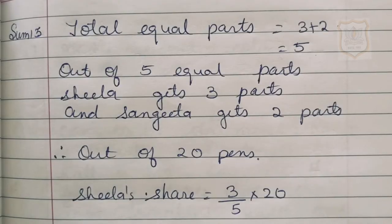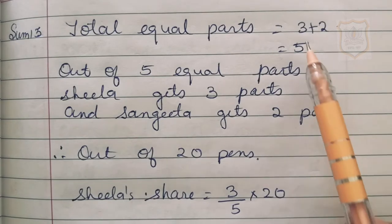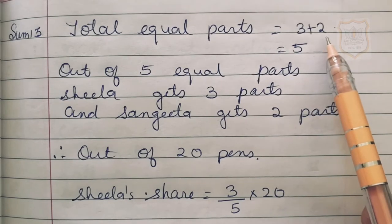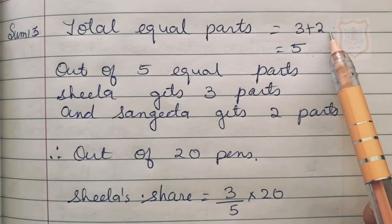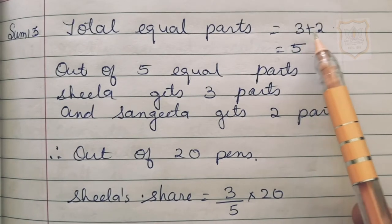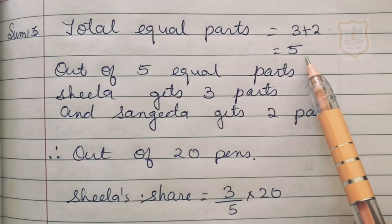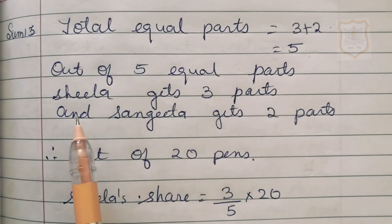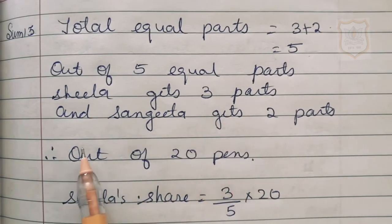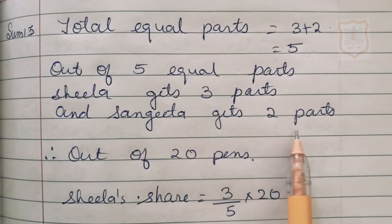Now, solution for sum number 13. First we have to find out the total equal parts. To find out the total equal parts, we will add 3 plus 2, which is given in the question as 3 ratio 2. That gives us 5. So the total equal parts are 5. Out of 5 equal parts, Sheila gets 3 parts and Sangeeta gets 2 parts.